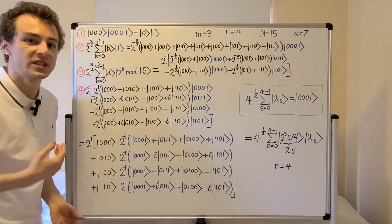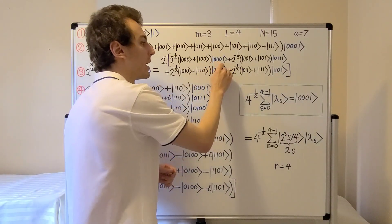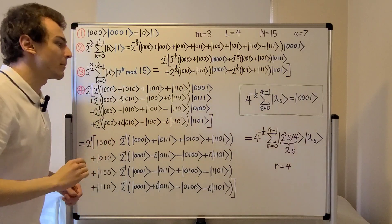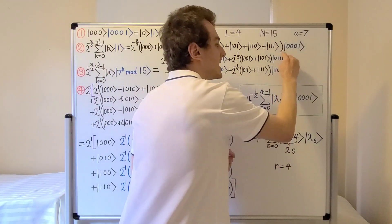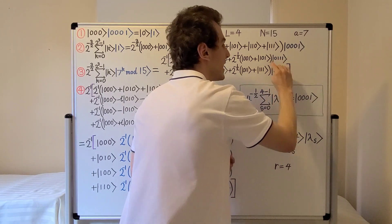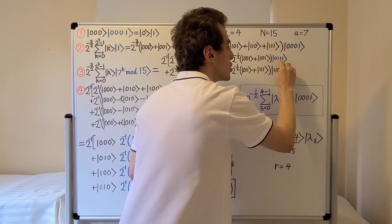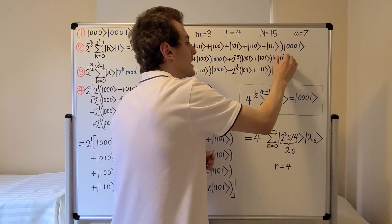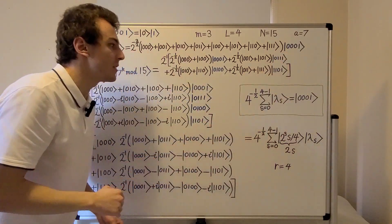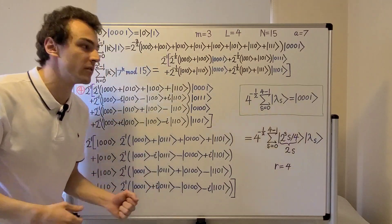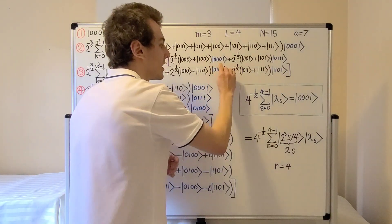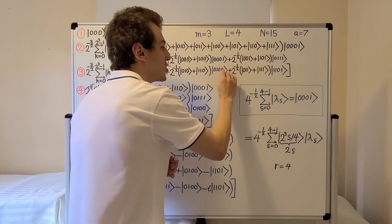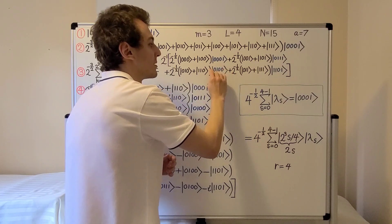Seven to the power of zero is one, and we can express one as zero zero zero one. Seven to the power of one is just seven, and seven can be written as zero one one one — that is the sum of four, two, and one, giving us the binary representation of seven. Seven squared, or seven to the power of two mod 15, is four, which is zero one zero zero — so there is no eight, no two, and no one, only a four in this binary representation.